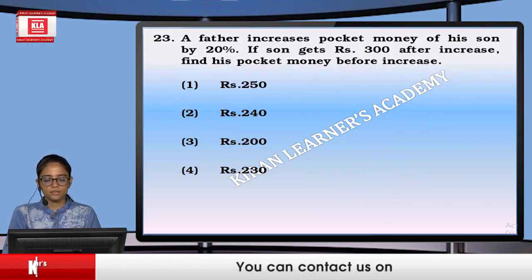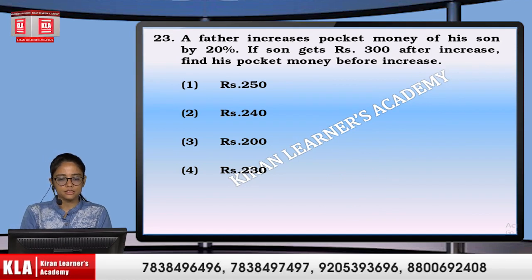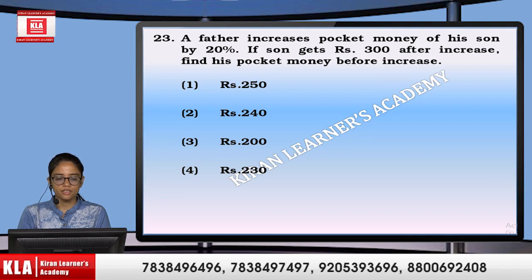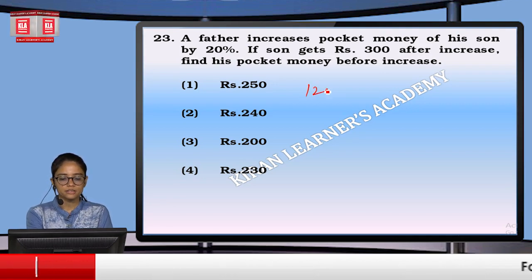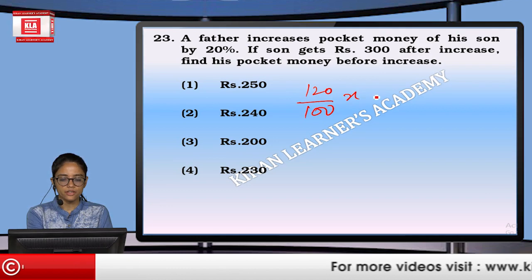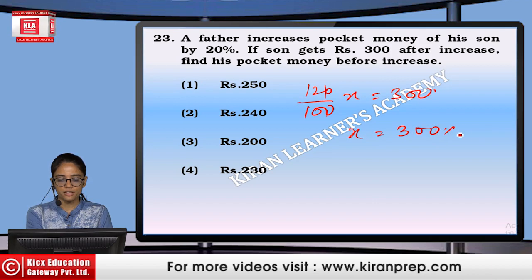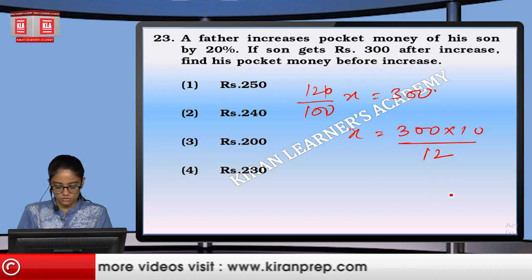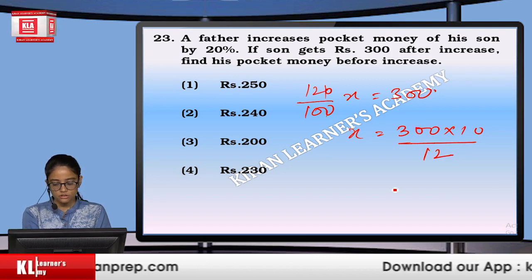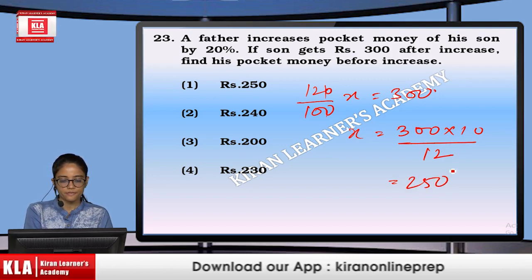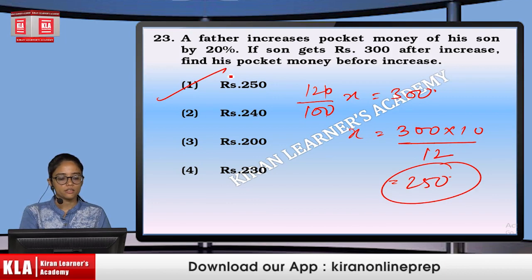A father increases his son's pocket money by 20%. If his son gets ₹300 after the increase, then 120% of X equals 300. So X equals 300 × 10/12, which gives 250. The original pocket money was ₹250. Option number 1.